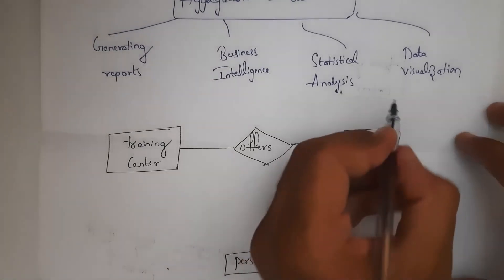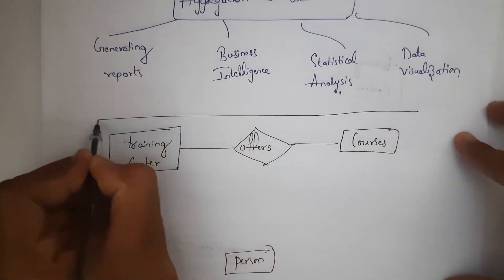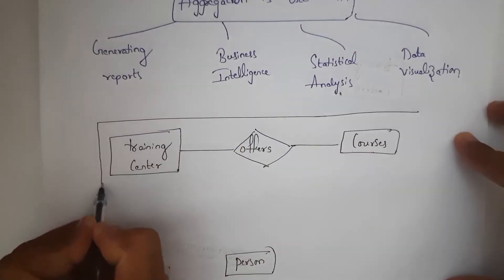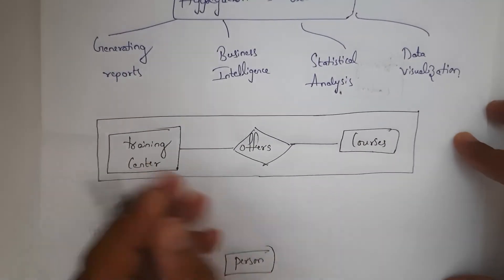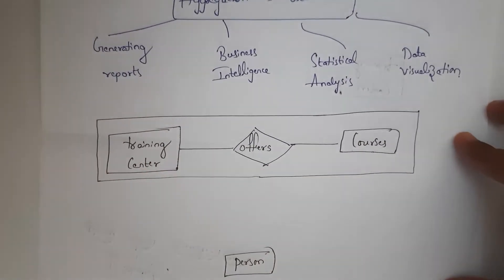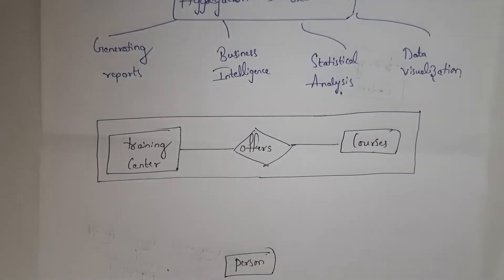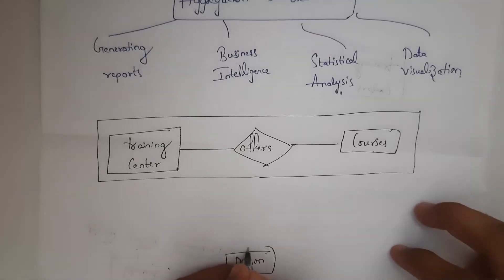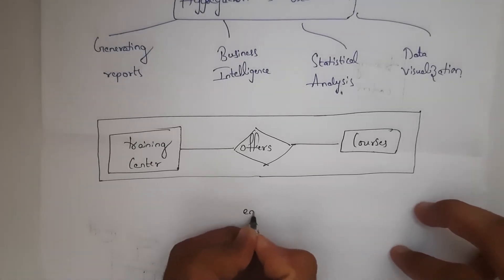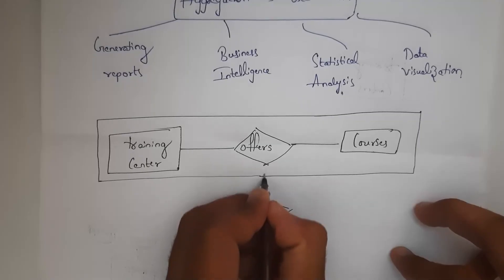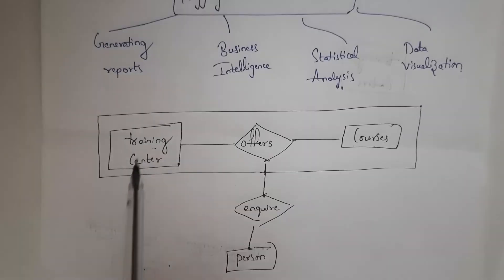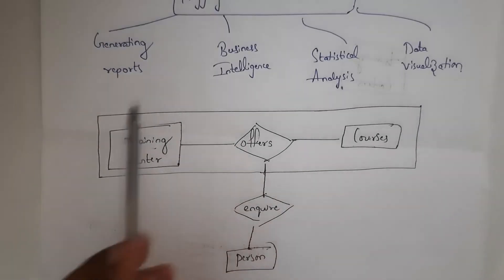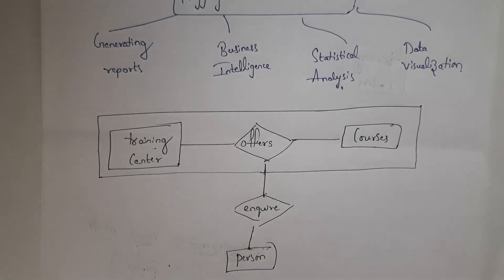So what I will do is create one new entity by combining these two entities — training center and courses. Now, training center and courses become one combined entity. I am creating an 'Inquiry' relationship connecting the person to this combined entity. Combining two entities to form a single meaningful entity is known as aggregation.